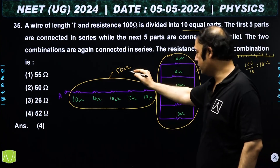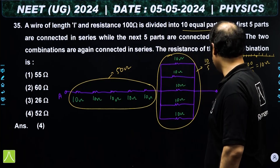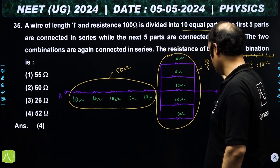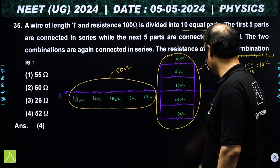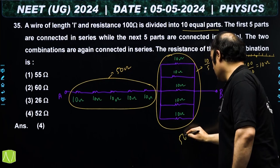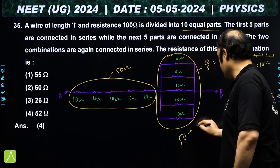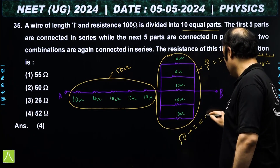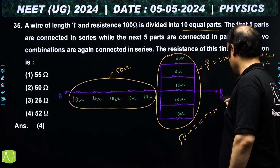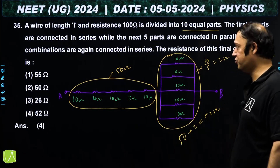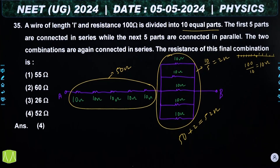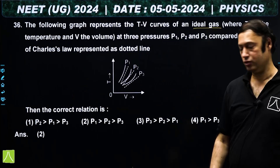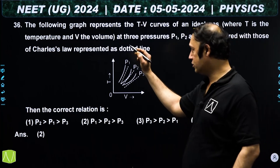The series combination (50 ohm) and the parallel combination (2 ohm) are then connected in series, giving a total equivalent resistance of 50 + 2 = 52 ohm.